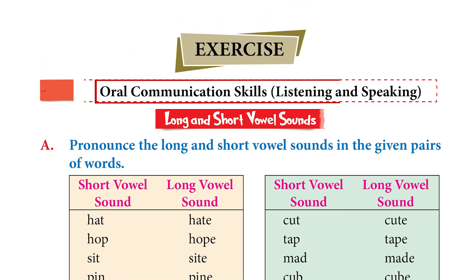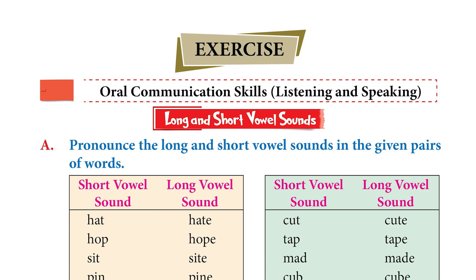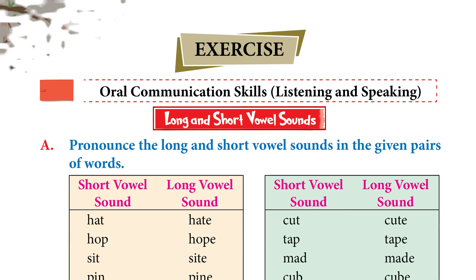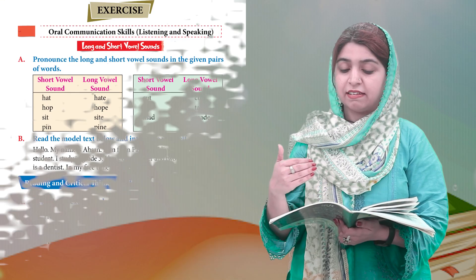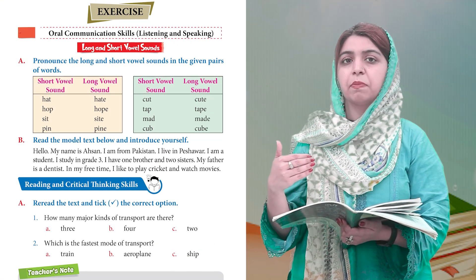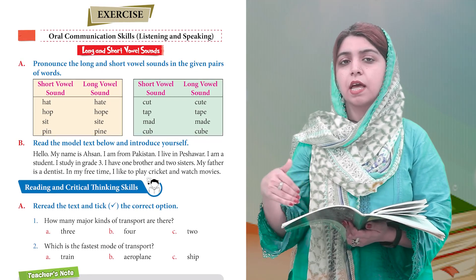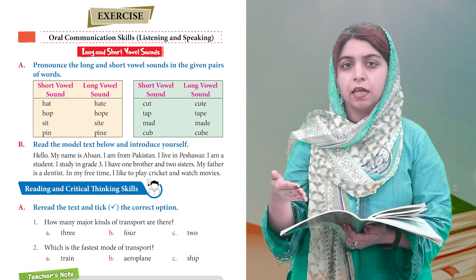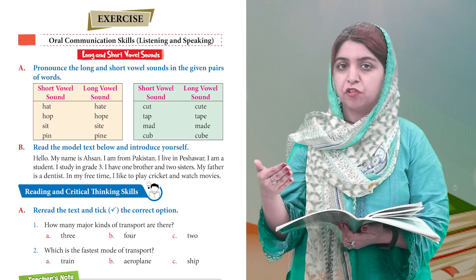Our first concept is Long and Short Vowels. Long Vowels means that when the vowel is called its name, whether it is an initial letter or a medial sound. For example, if you use a word like 'plain' — in 'plain' you can hear the long vowel sound.